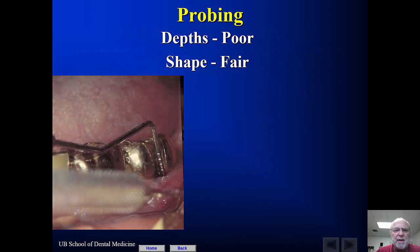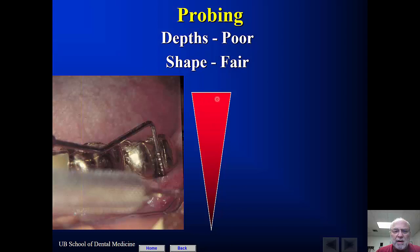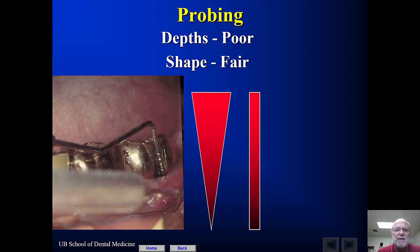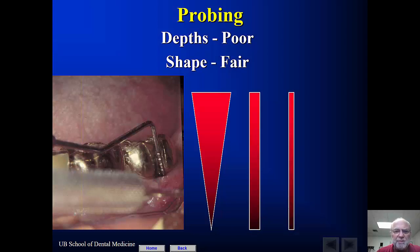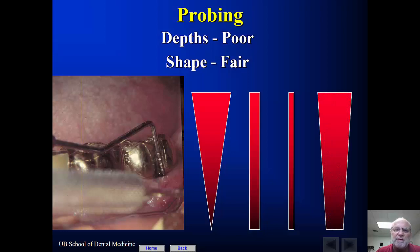Probing depths are poor; shape is fair. You can have extreme probing depths in endo or periodontal disease. A wide, shallow shape is probably — not exclusively — going to be periodontal disease. A narrow, deeper shape could be endodontic rather than periodontal, because the lesion would be starting from the apex to the crown. Something like a narrow, linear defect could be a vertical root fracture. There are so many variables, which is why shape is only fair. And if you have a lot of bone loss, it's very difficult to tell.